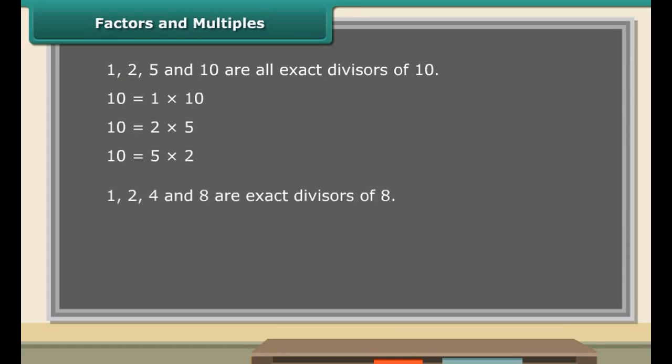Similarly, 1, 2, 4, and 8 are exact divisors of 8. Therefore, 1, 2, 4, and 8 are factors of 8. You can see that factors are always smaller than or equal to the number itself.